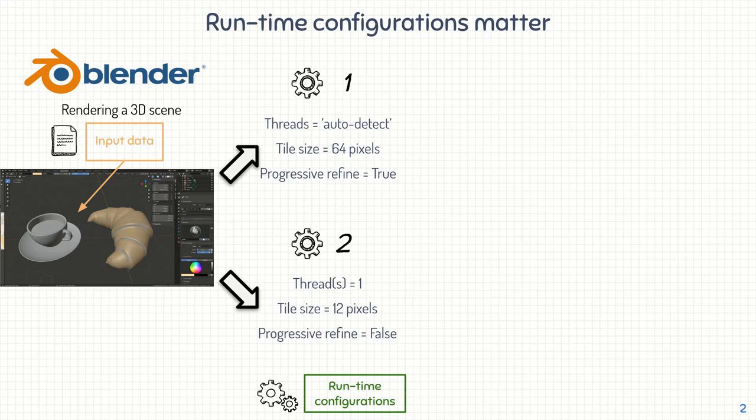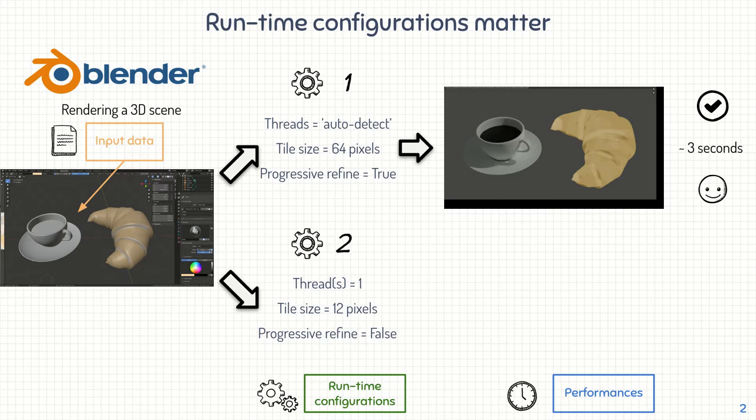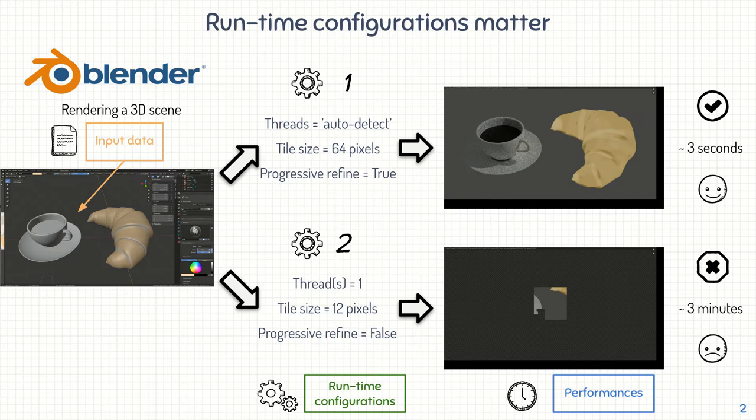For both runtime configurations, we measure one performance property: the time needed to render the scene. For the first runtime configuration, the rendering is quite smooth — in a few seconds we can see the scene without noise. However, for the second runtime configuration, it works, but you will have to be patient and wait about 3 minutes to see the entire scene. So if you are in a hurry, we can advise you to choose the first runtime configuration rather than the second.